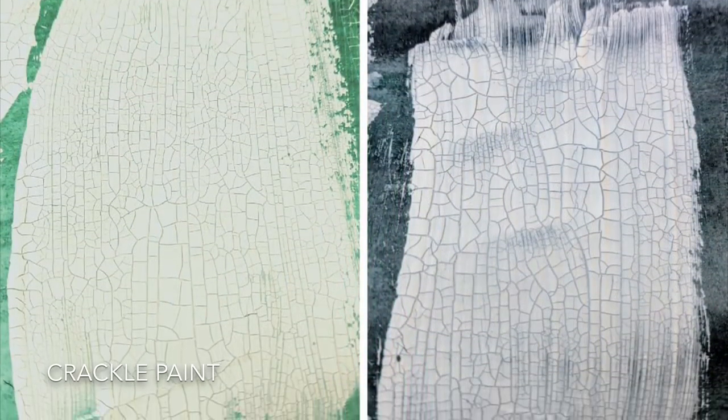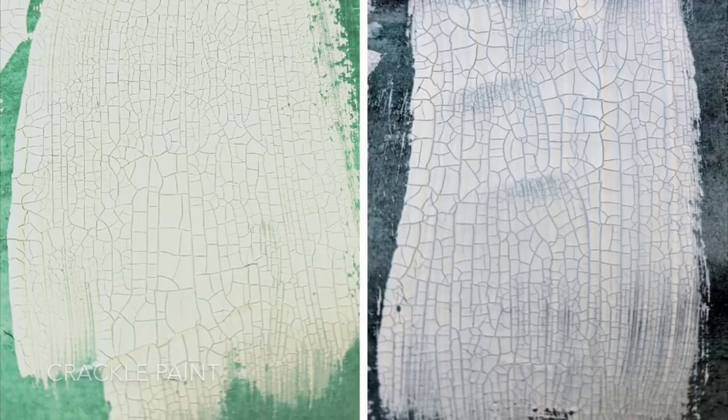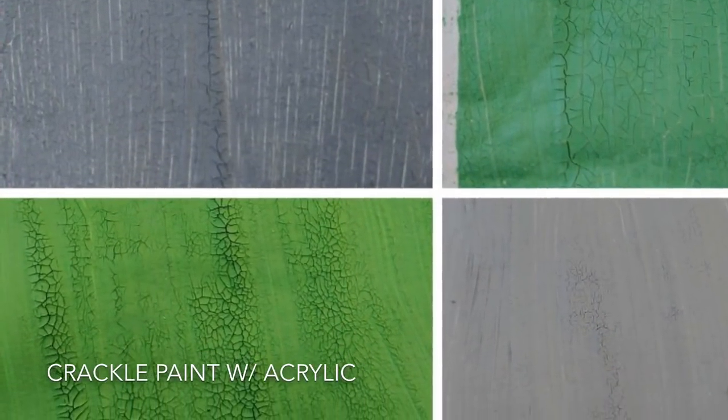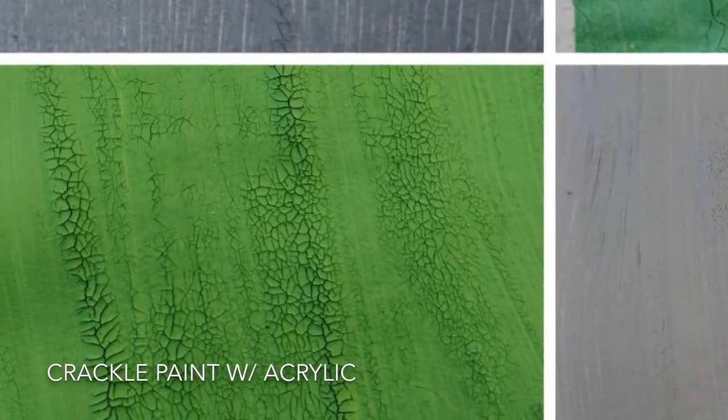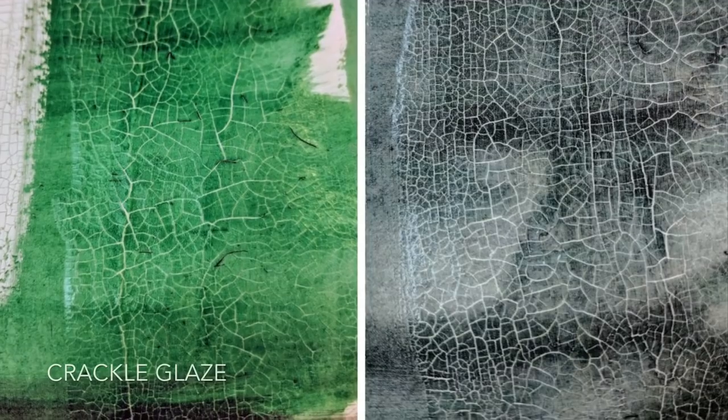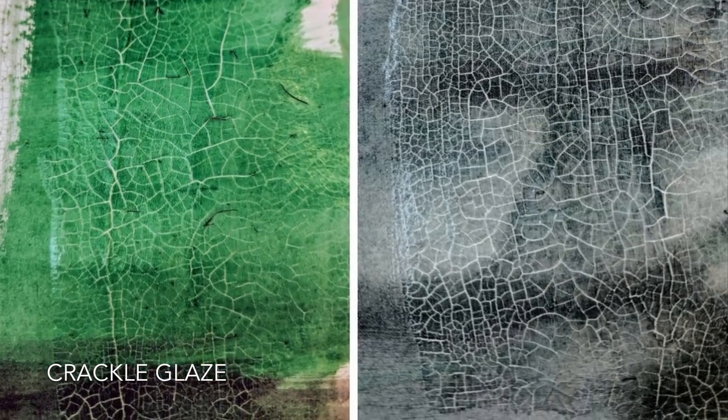And then this is the paint without anything mixed in. And it looks really good. And then it looks like the green on that bottom there did a lot more of the cracking than the darker color. And then this is the glaze.